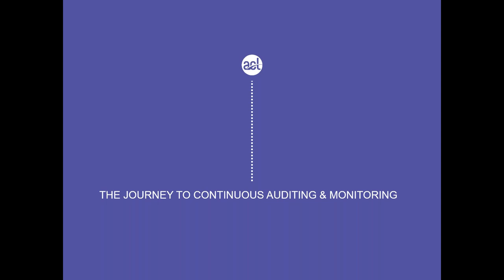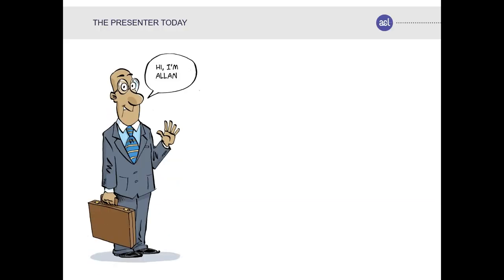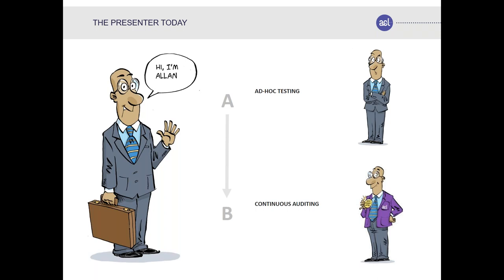In the journey to continuous auditing and monitoring, we're introduced to Alan, our auditor. Alan will walk us through two steps: identifying what his problems were, and then identifying what the solution was and how ACL solved those problems. Alan was an incredibly frustrated auditor who used to perform ad hoc testing only. Now he oversees a continuous auditing program — he's got his ACL jacket on and his 'most sought after' badge.